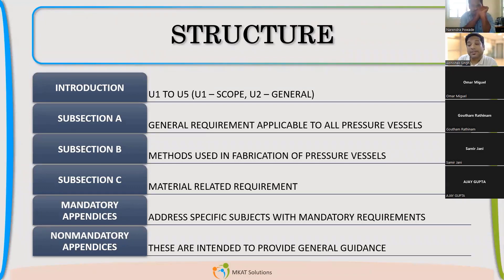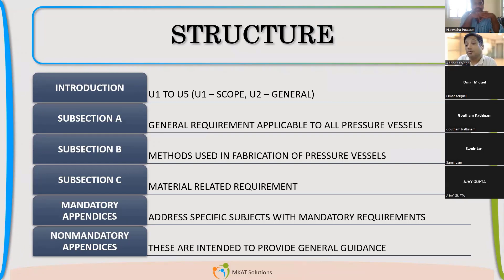In subsection B, you will find the methods which are used in fabrication of pressure vessels. So, how to fabricate, how to weld, how to give the joint efficiency, how to weld so that you will have good joint efficiency — all these requirements will be covered in subsection B.